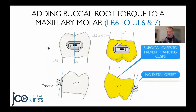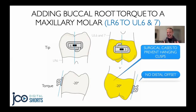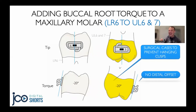For the maxillary molars, if we want to add buccal root torque, I like to use a lower first molar tube. The lower first molar tubes have 20 degrees of labial root torque — or 20 degrees of buccal root torque. If we place the lower right 6 tube on the upper left 6 and 7, we can establish a significant amount of buccal root torque. I like to do this for surgical cases to avoid excessive palatal cusp enameloplasty and also when doing arch wire expansion to avoid hanging palatal cusps. If we're extracting in the upper arch, this technique has the advantage of tubes with no distal offsets. When finishing class 2 or class 3 molar, we don't want to roll our molars out mesially.